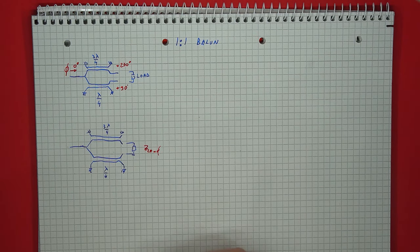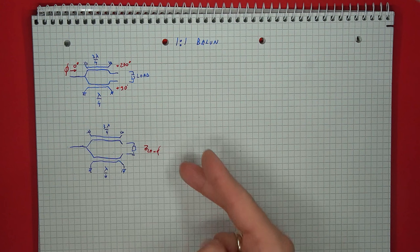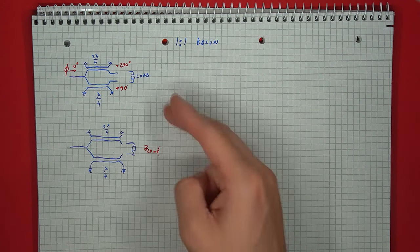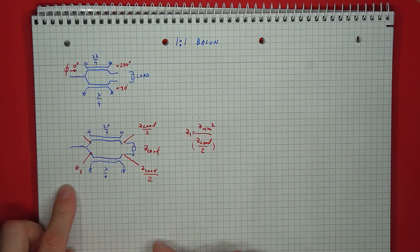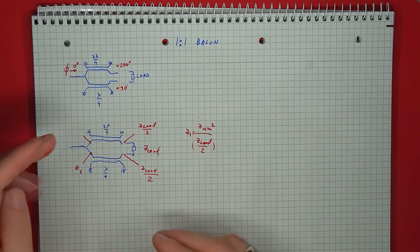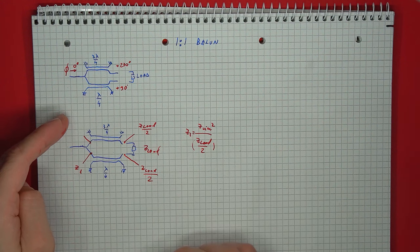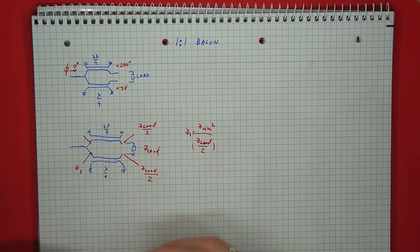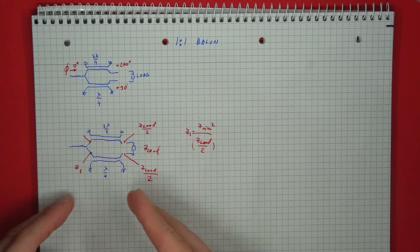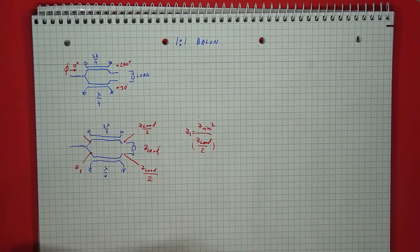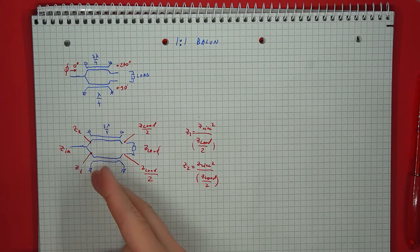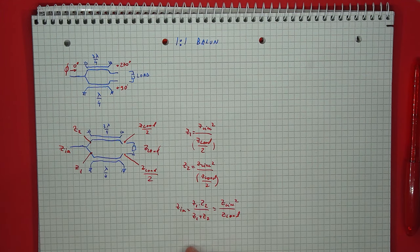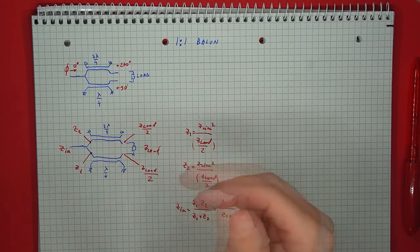Looking at the impedance, we can assume the balun's balanced side is well balanced, so the final load can be divided into two equal parts for each branch. The impedance seen from the quarter wavelength branch is the line's impedance squared divided by half of the load. On the three-quarter wavelength branch, treating it as a quarter wavelength plus a half wavelength section, the half wavelength section does not impact the seen impedance. So both branches present the same impedance, and the input sees them in parallel, giving a final impedance of the line's impedance squared divided by the load impedance.